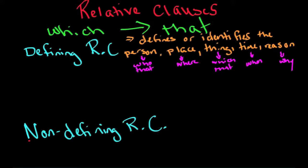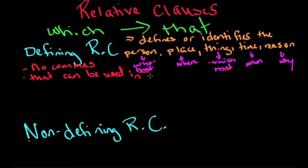In a defining relative clause, you can substitute that for who and that for which. So you can use that to substitute. There's no commas before or after the clause. That can be used in place of who or which.